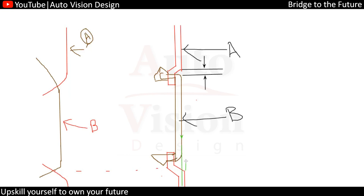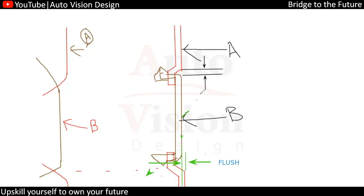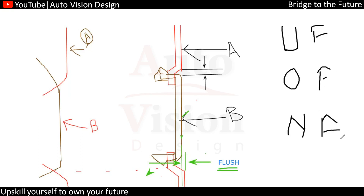From this line to this line — the distance we have — that is known as flush. Flush is nothing but the class A surface level difference. We'll always try to have a flush condition, and in flush we have three conditions: under flush, over flush, and no flush.